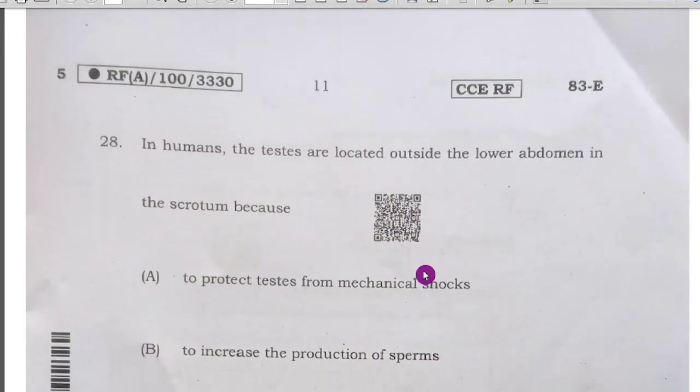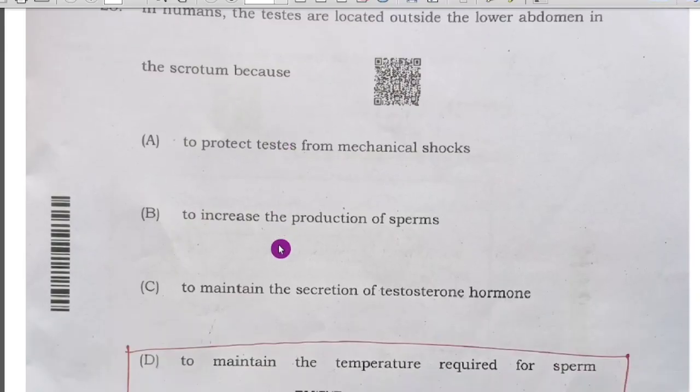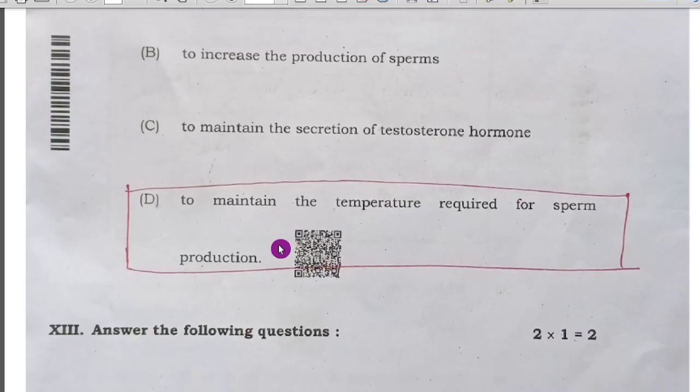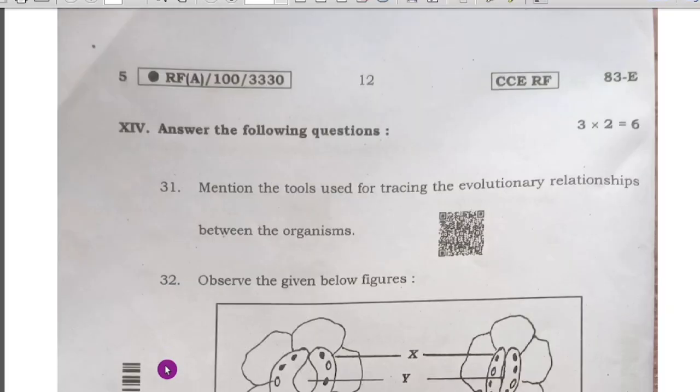Next, we have the 28th question. The testes are located outside of the lower abdomen in the scrotum because, fourth option, to maintain the temperature required for sperm production. Next, two examples of binary fission: that is Leishmania and Amoeba.